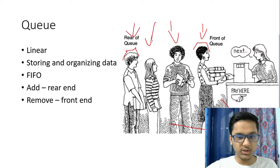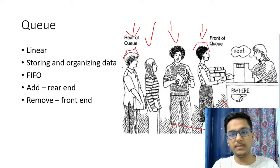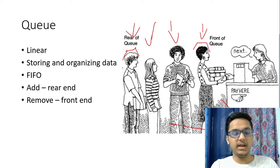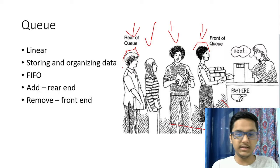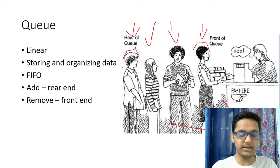This is what queues essentially are. Queues can be implemented through arrays and linked lists, and linked lists will be covered later. So I'll only be covering how queues can be implemented through arrays.